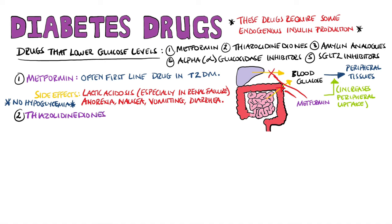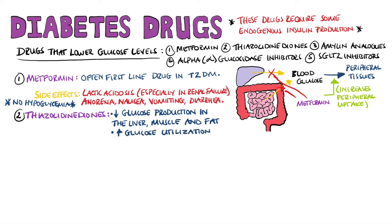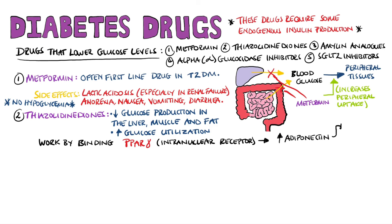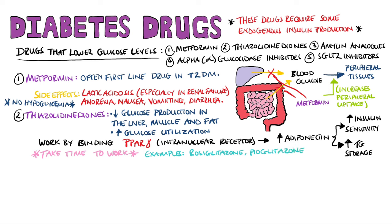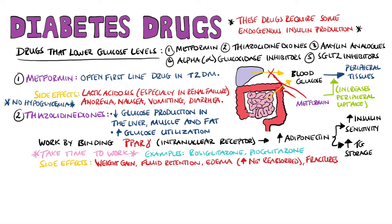Thiazolidinediones decrease glucose production in the liver, muscle, and fat, and also increase glucose utilization. They achieve this by binding to PPAR-gamma, an intranuclear receptor, which upregulates adiponectin, leading to increased insulin sensitivity and fatty acid oxidation and increased triglyceride storage. Because they work through gene regulation, they take time to work. Examples include rosiglitazone and pioglitazone. Side effects include weight gain, fluid retention, and edema due to increased sodium reabsorption, as well as a predisposition to fractures due to decreased bone mineral density.